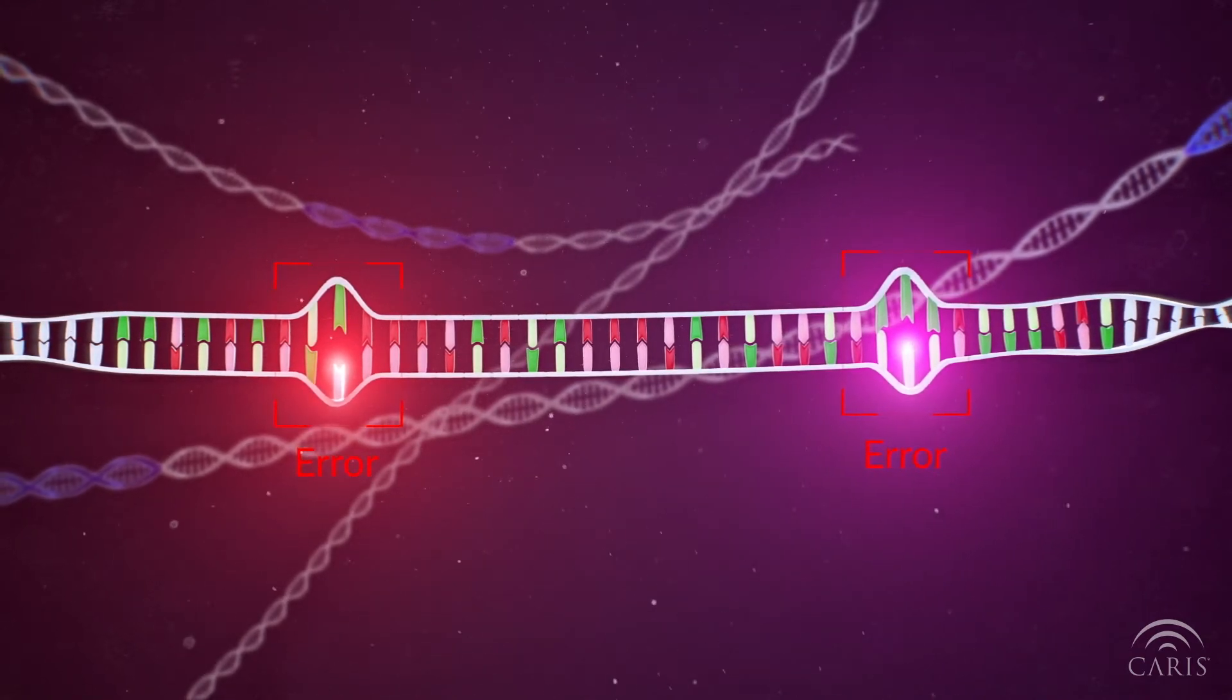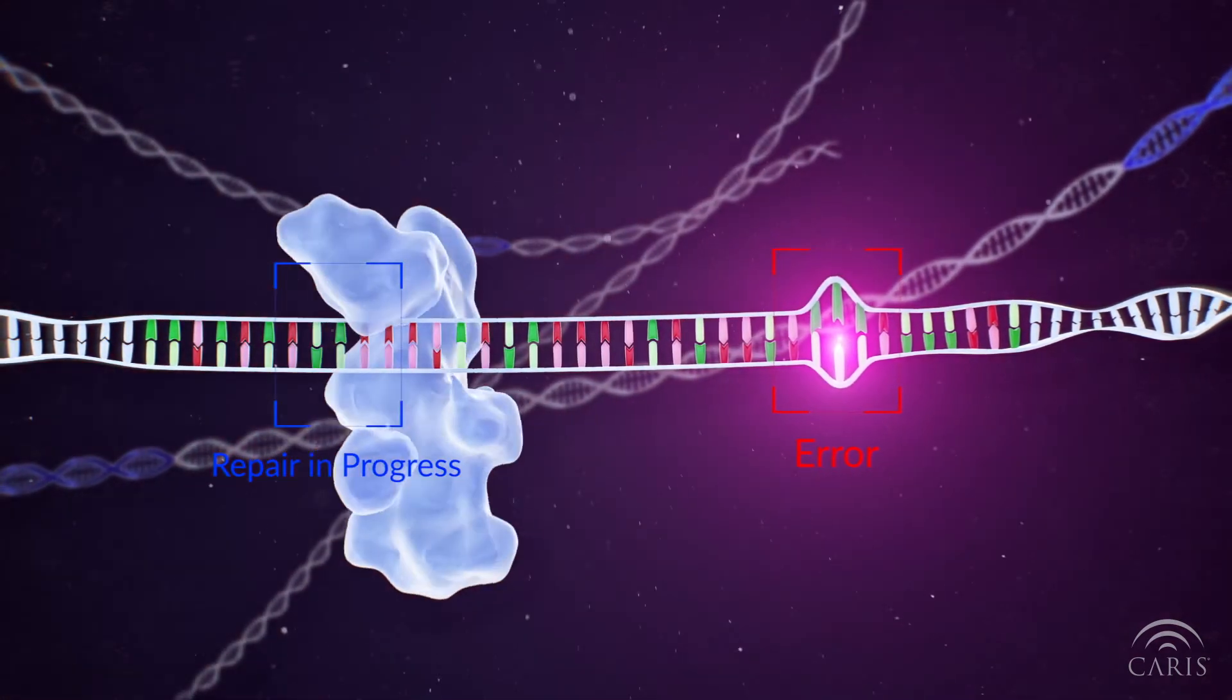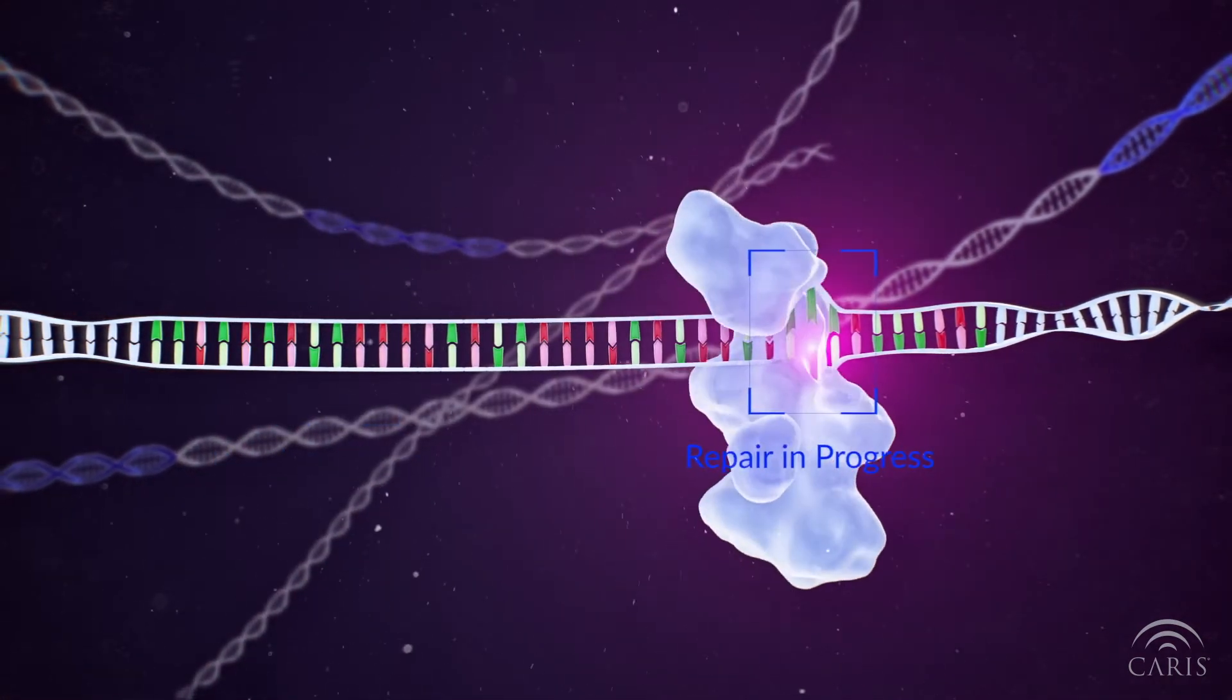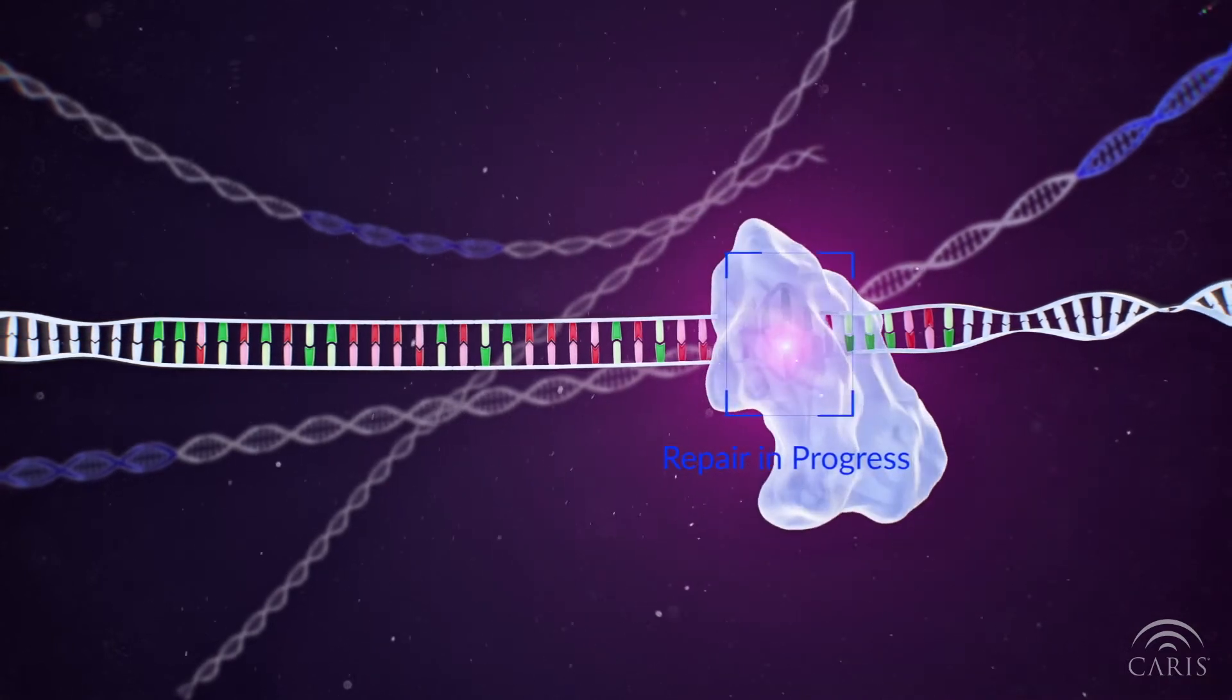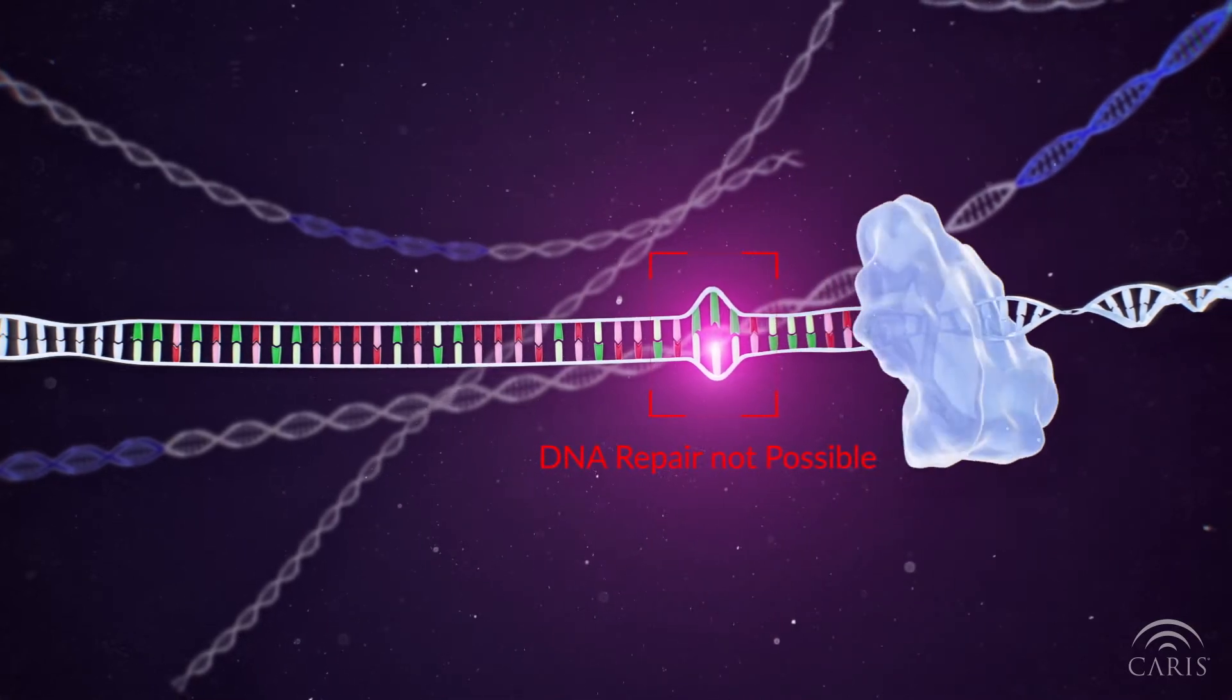The human body has a mismatch repair system that identifies when bases are mismatched or paired incorrectly and corrects these mistakes. Sometimes cancer cells can have defects in this repair system, and DNA alignment errors are not able to be fixed.